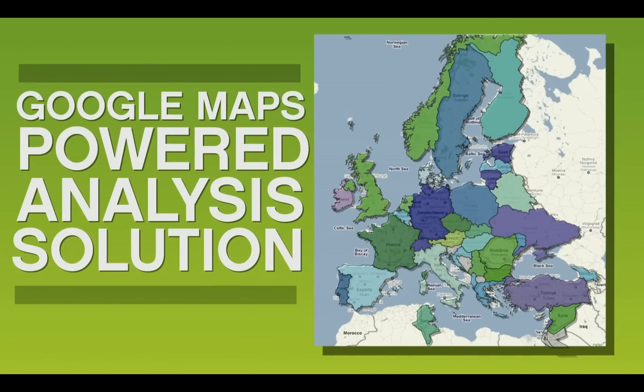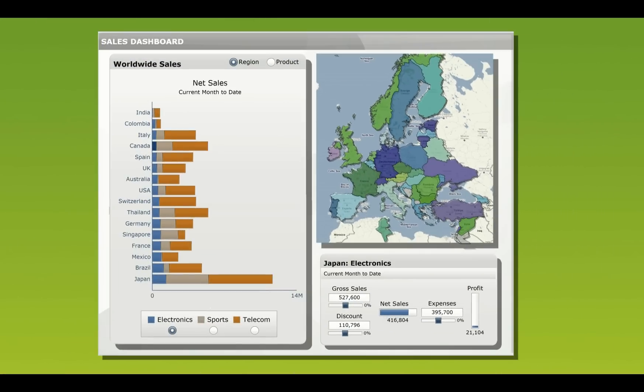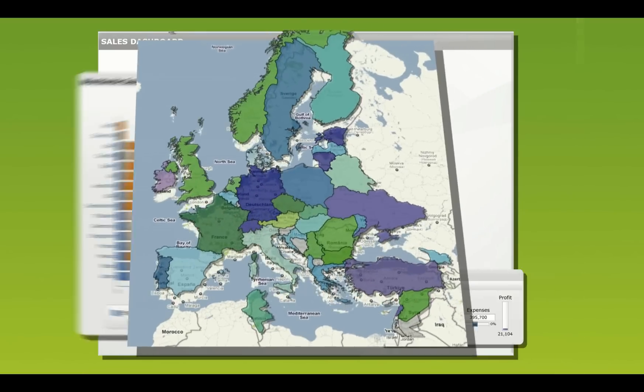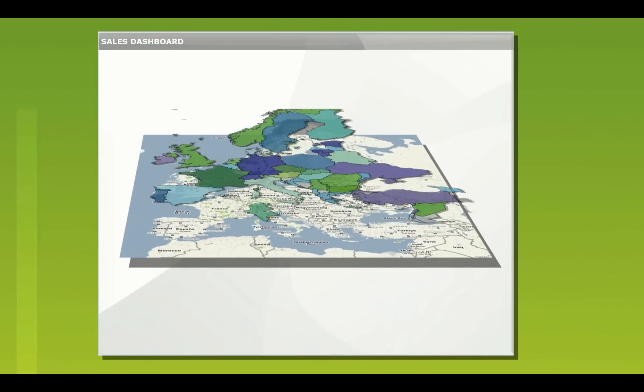It's a Google Maps powered analysis solution designed specifically for business intelligence. G-Maps Plugin uses the same Google Maps technology that you know and love, then layers your secure business analytics on top.